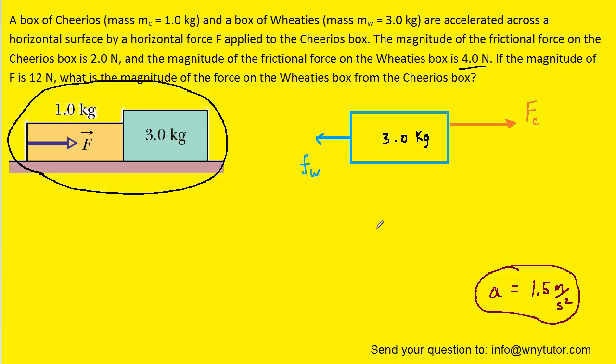We can now turn to Newton's second law again. As found earlier, the acceleration is 1.5 meters per second squared. The mass of the Wheaties box is 3 kilograms, and Fw is 4 newtons.